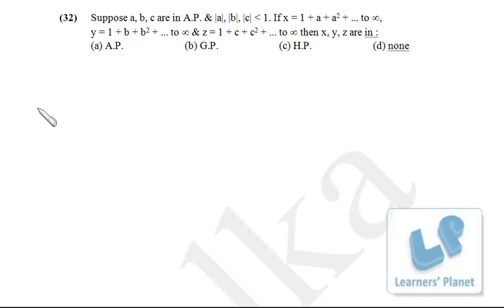Now this sum, again an important one. Suppose a, b, c are in AP and modulus of a, b, c less than 1, x is equal to this, y is equal to this, z is equal to this.